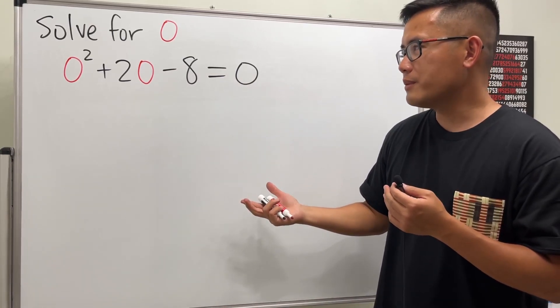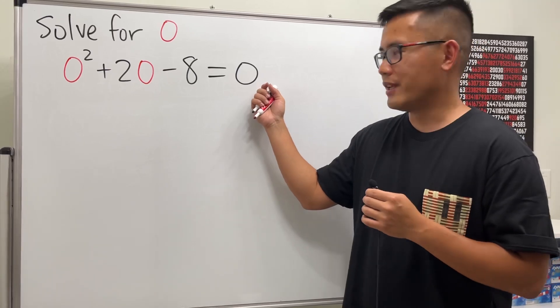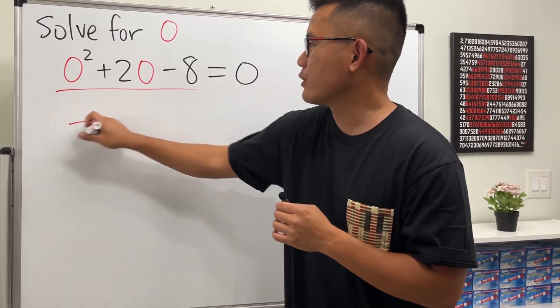So now this is a quadratic equation. We can just factor it. Thankfully, we have equal to 0 already, so we can just go ahead and do the tic-tac-toe factoring right here.